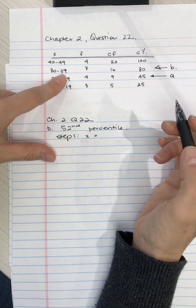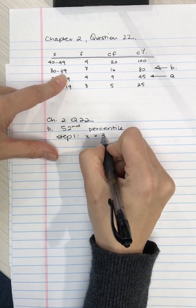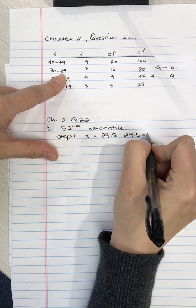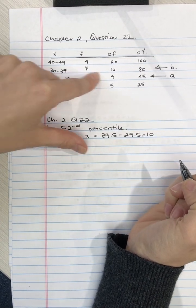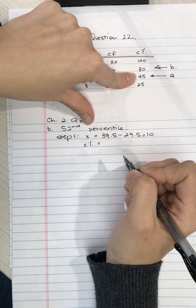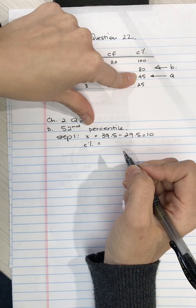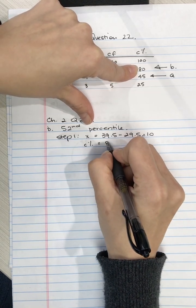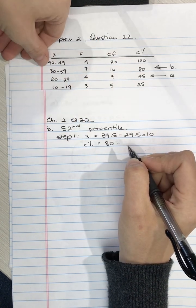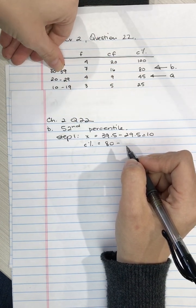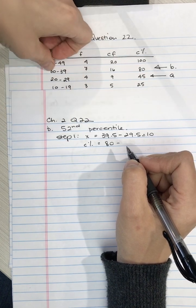So the width we can get from the previous question, 22A, and the width on X is 10. To calculate it again, it's 39.5 minus 29.5 and that's 10. The interval on the percentages side and the percentages column is usually going to change.